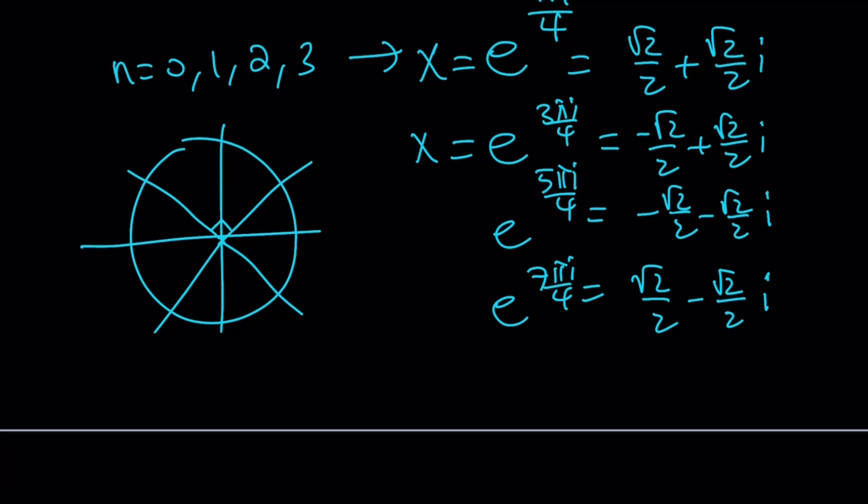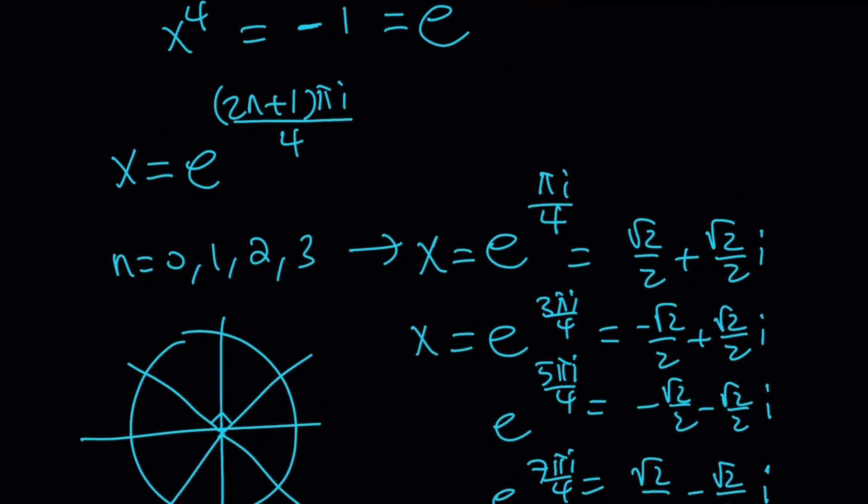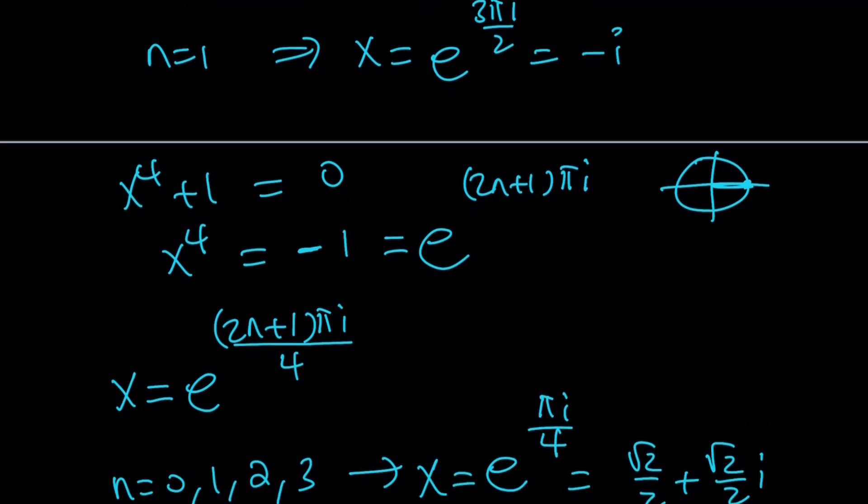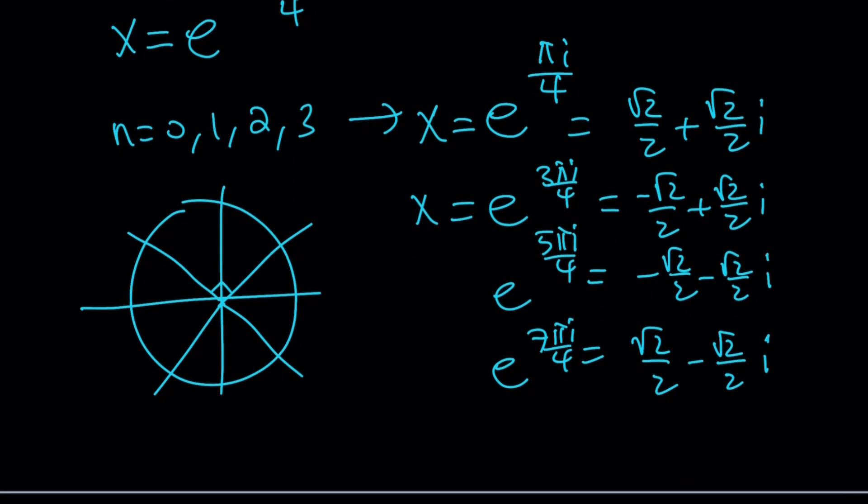And they're obviously going to be 90 degrees apart. So, those are going to be all the solutions along with the i and -i. We've got six solutions. And this is a six-degree polynomial. So there should be six complex solutions. And that includes real numbers as well.